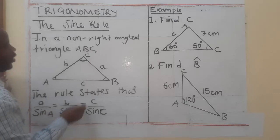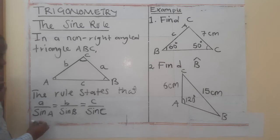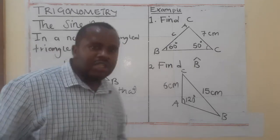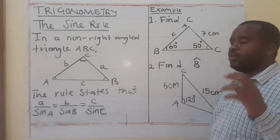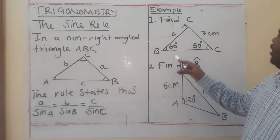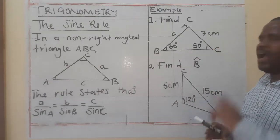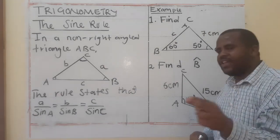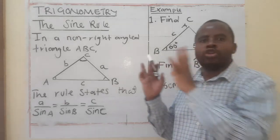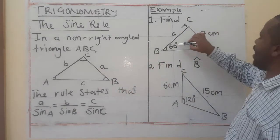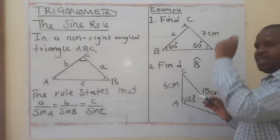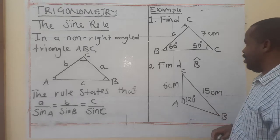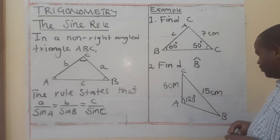Take note this is applicable to a non-right-angled triangle. You don't use all the ratios at the same time — you only need two. The first situation where you apply the Sine Rule is when you have two angles and a side given, but the side given must correspond to one of the angles.